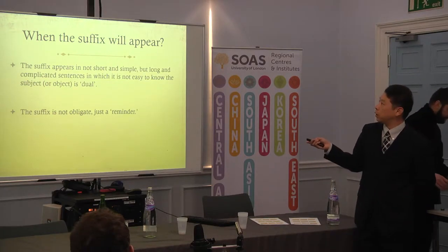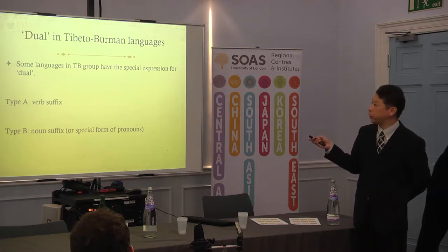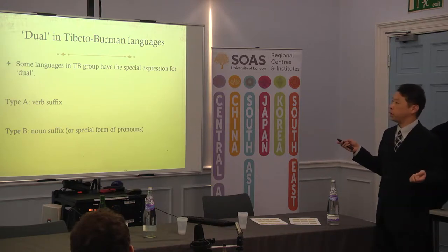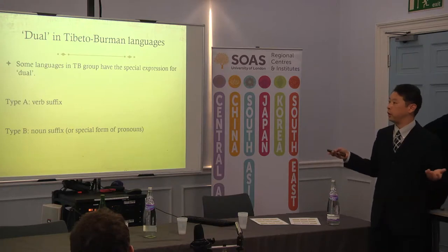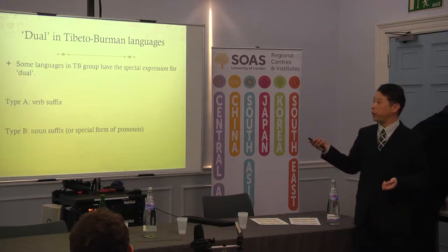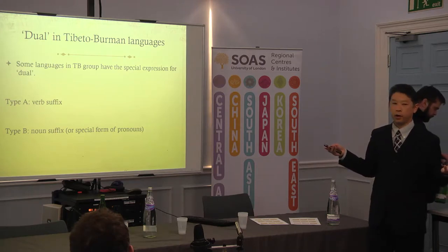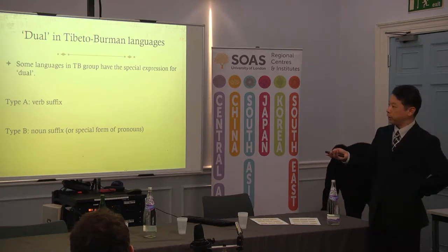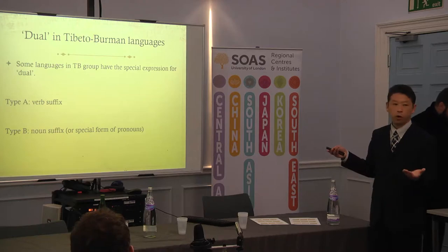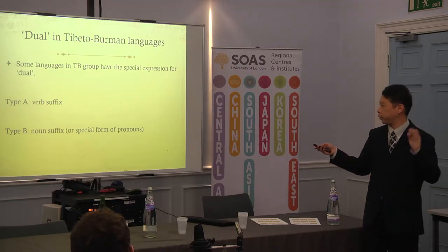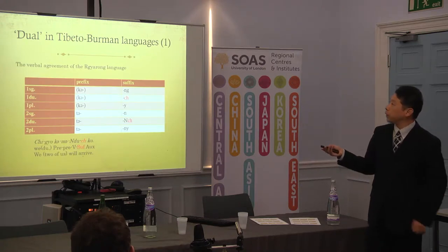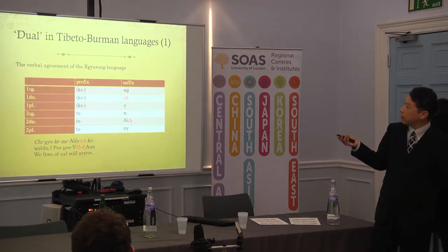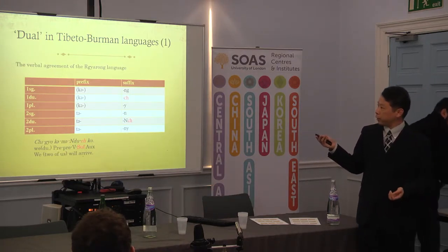Is this possible from the viewpoint of Tibeto-Burman languages? Some languages in Tibeto-Burman have a special expression for this kind of dual persons. Type A is by verb suffix, as in Tangut. And Type B is noun suffix or special form of pronominal.